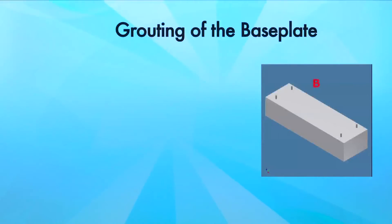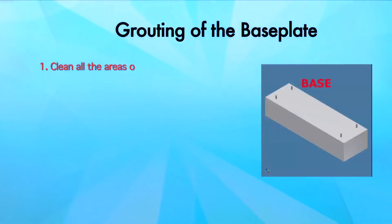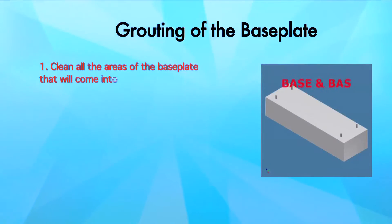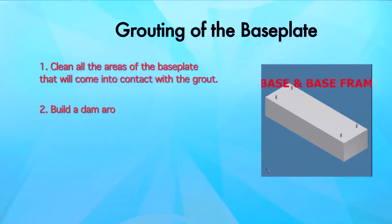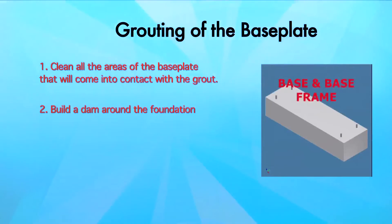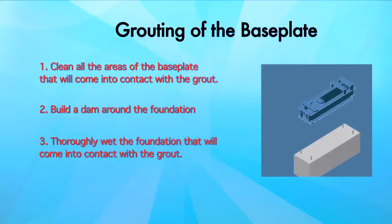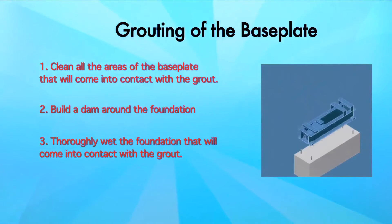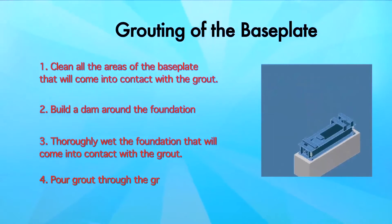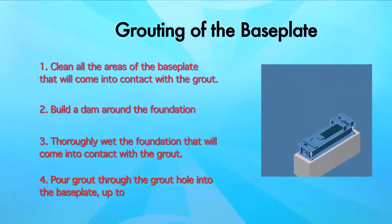Grouting of the base plate. Step 1: clean all the areas of the base plate that will come into contact with the grout. Step 2: build a dam around the foundation. Step 3: thoroughly wet the foundation that will come into contact with the grout. Step 4: pour grout through the grout hole into the base plate up to the level of the dam.